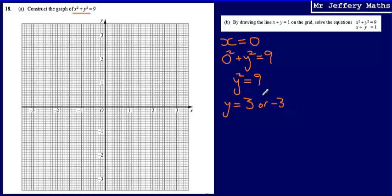So this gives us two coordinates. It gives us the coordinate, so x is 0. It gives us the coordinate 0, 3. And it gives us the coordinate 0, negative 3.